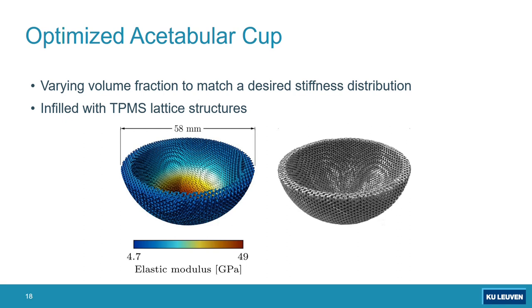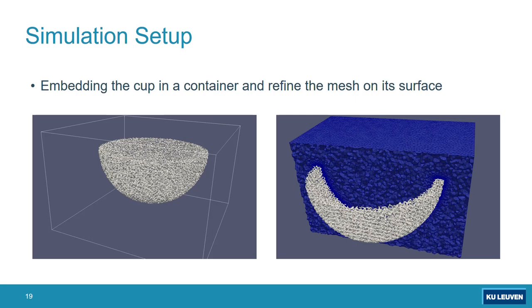Then we wanted to see how the degradation behavior would be. In order to do that, as you saw in the typical output of the model, we embedded it inside another container acting as an electrolyte or surrounding environment, and then refining the mesh on its surface.